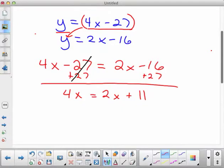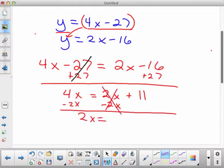Okay, so the next step then is to move your x to the left to get it with the 4x. So minus 2x from both sides. And so 2x then is equal to, these again cross out because that's 0, so 2x equals 11.